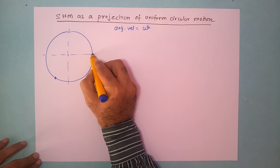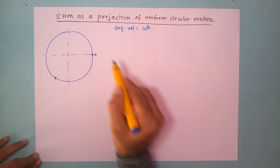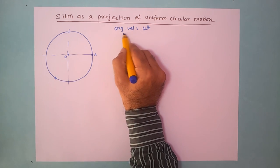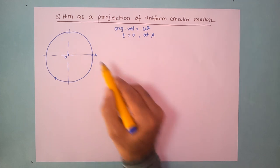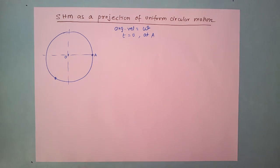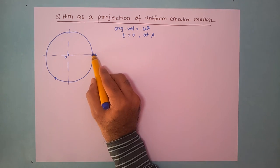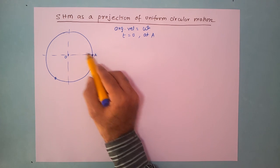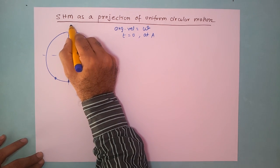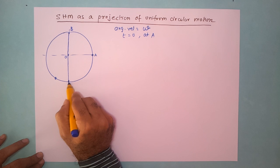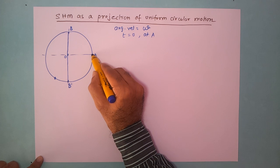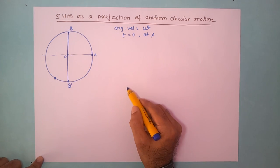Let us say the object is initially at location A and the center is O, so at time t equal to 0 it is at location A and then it performs circular motion. We focus on the projection of this particle on a diameter — in this case diameter B to B'. We want to find the projection of the object on this diameter as it performs circular motion.